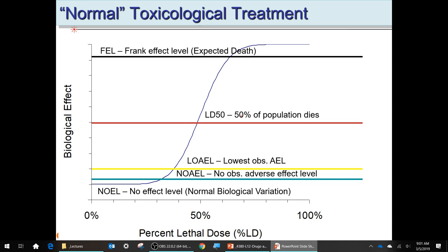Whenever we do toxicological studies, we use animal models — mice, rabbits, or similar. They test the drugs on those animals and fit the results to an S-curve to determine the LD50.